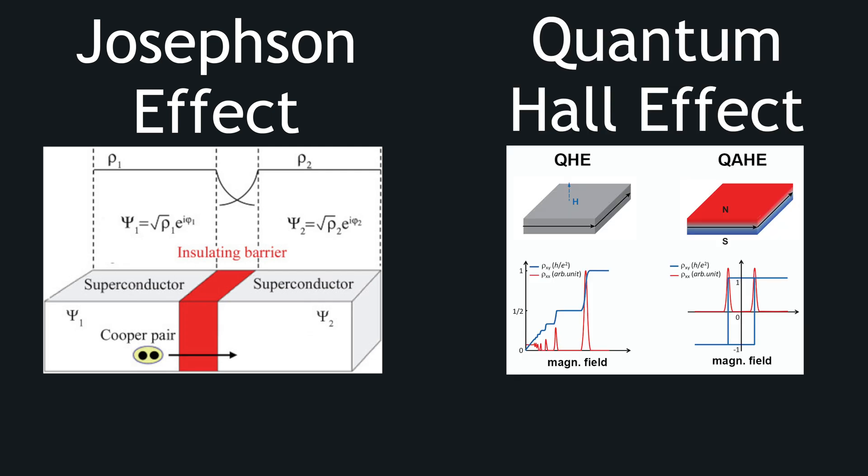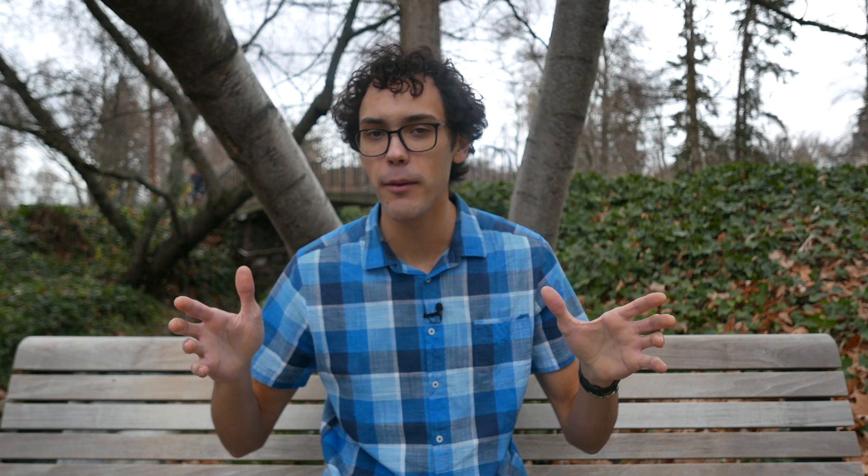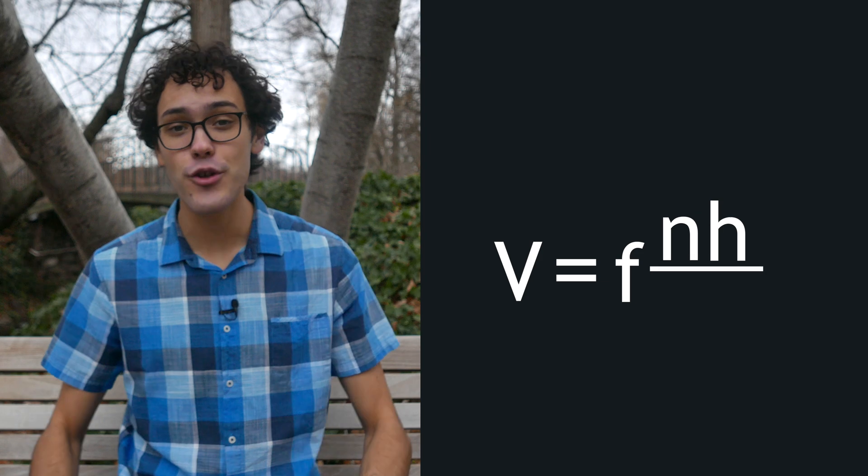Now to measure V and R, two different quantum effects are used, the Josephson effect and the quantum Hall effect, which are both beyond the scope of this video. But importantly, they have equations that we can use. The Josephson effect allows us to linearly convert from a microwave frequency to a voltage, given by the equation V equals frequency times nh over 2e,